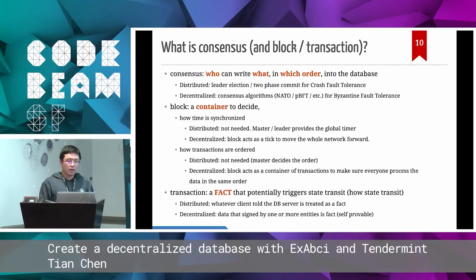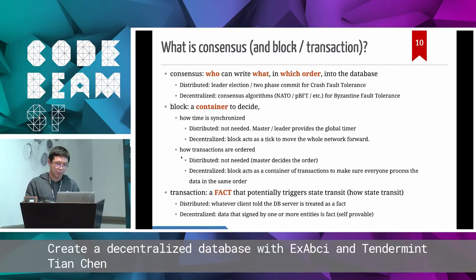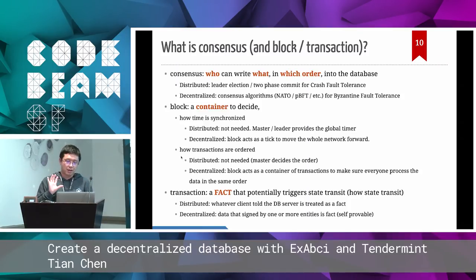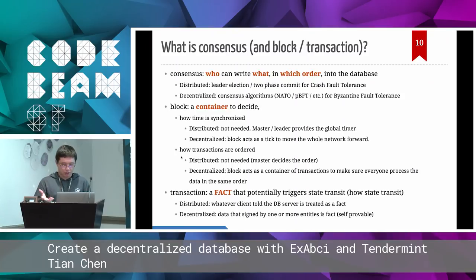This is the most important difference between a distributed database and a decentralized database. All the consensus algorithms and blocks serve to make sure transactions are applied in the same order across all nodes in the network. This is the minimum concept for consensus and the foundation of blockchain technology and decentralized ledger technology.